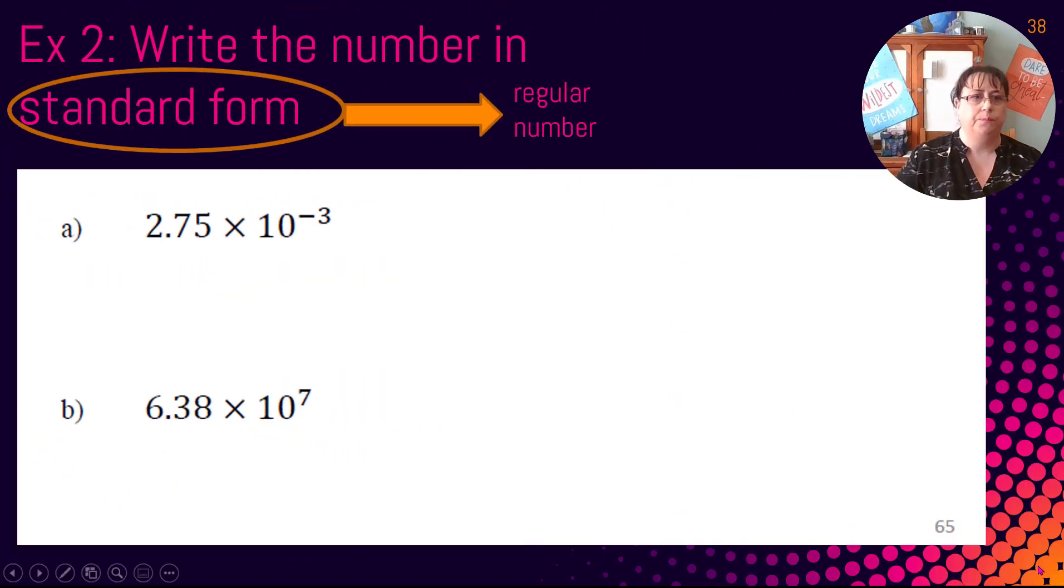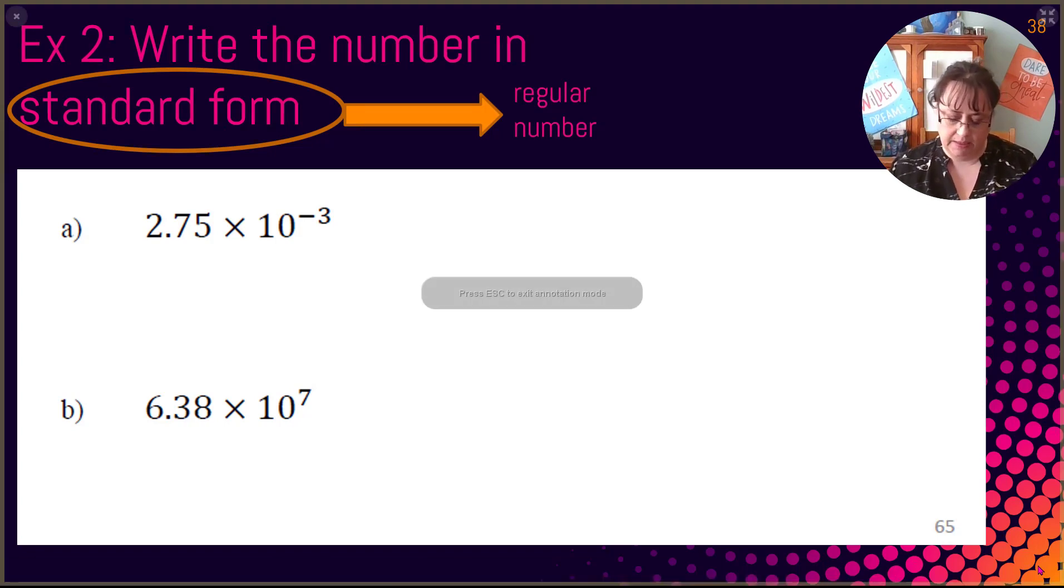Example number two, write the number in standard form. Standard form just says put it into a regular number. So remember, maybe this is a great thing to just jot down. If we have a positive exponent, the number is going to be bigger. So we're going to move our decimal to make a bigger number. If it's a negative, it's going to get smaller. So that's a really good thing to remember right off the bat.